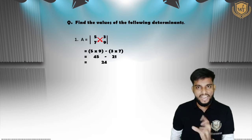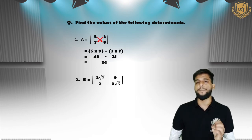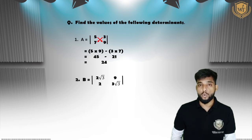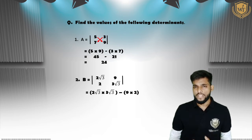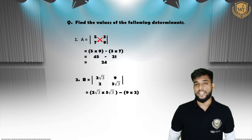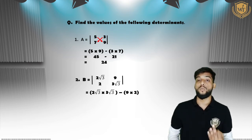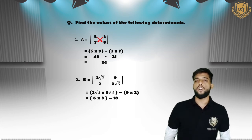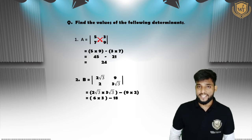Let us take one more example — determinant B with elements 2√3, 9, 2, and 3√3. So 2√3 will be multiplied to 3√3 and 9 will be multiplied to 2. In the first bracket: rational part 2 into 3 gives 6, and irrational part √3 into √3 gives √9 which is 3, so the first bracket gives 6 into 3 = 18. Then 18 minus 18 equals 0, so the value of determinant B is 0.